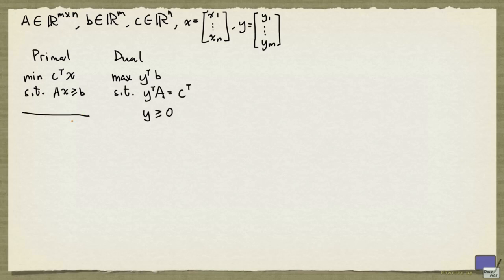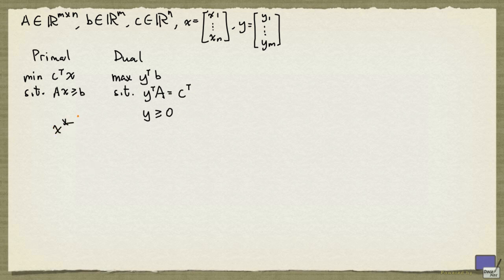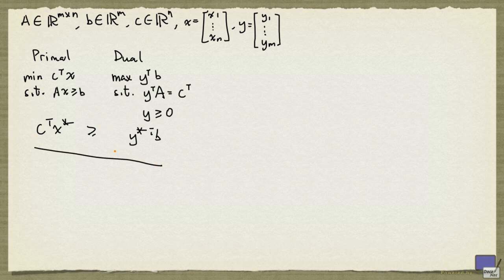Recall that the dual problem of this minimization problem is defined to be this linear programming problem here. There are a couple of important results concerning this primal-dual pair. The first is that if you have a feasible solution x* for the primal problem and a feasible solution y* for the dual problem, then the objective function value of the primal problem is at least the objective function value of the dual problem. So if c-transpose x* equals y*-transpose b, then x* is optimal for the primal and y* is optimal for the dual. This result is called weak duality.